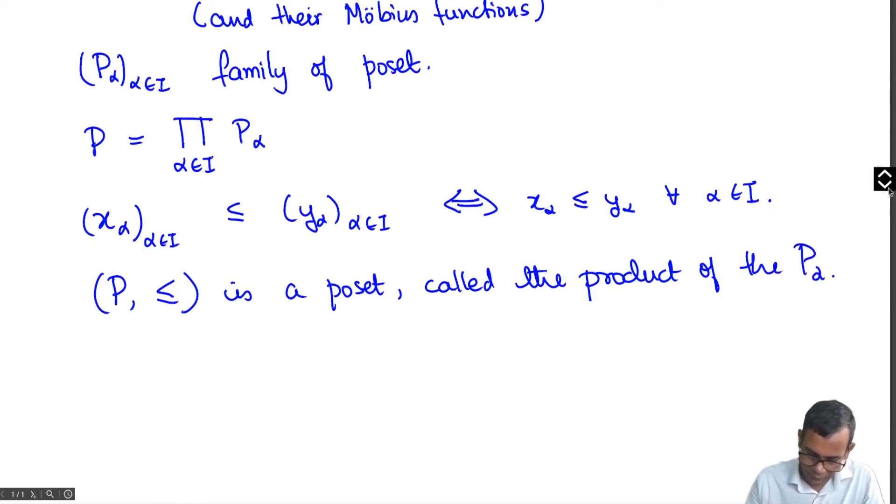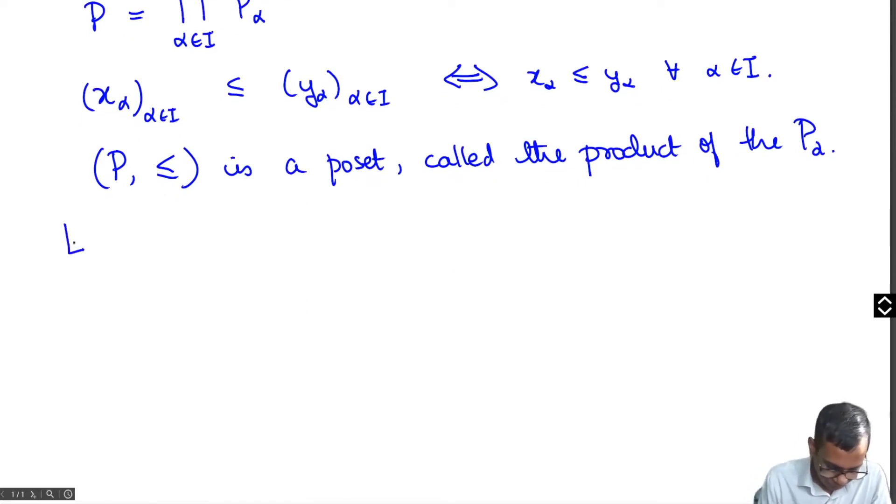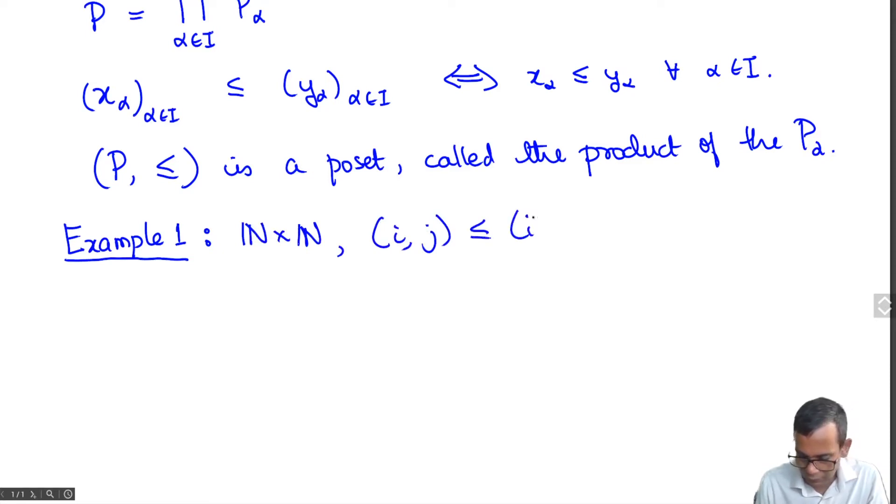We've already seen some examples of these things. Firstly, we had ℕ×ℕ with the relation (i,j) ≤ (i',j') if and only if i ≤ i' and j ≤ j'. This is clearly an example of a product poset.